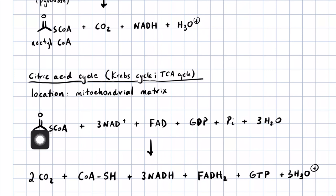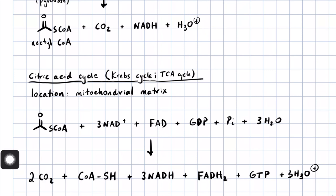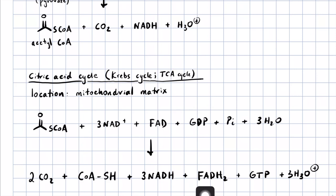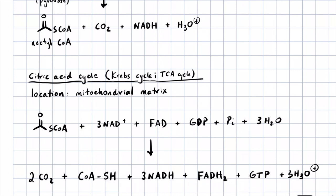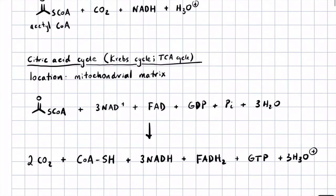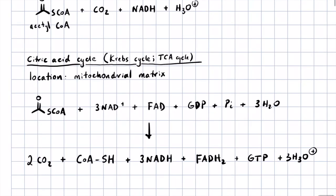That involves oxidizing both of the carbons in acetyl-CoA and breaking a carbon-carbon bond, which gets us three molecules of NADH, one molecule of FADH2, and one molecule of GTP. We'll talk about what all of these stand for, but I just wanted to give you an overview of the process.